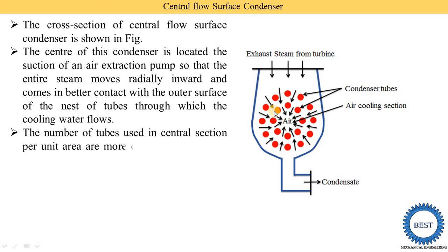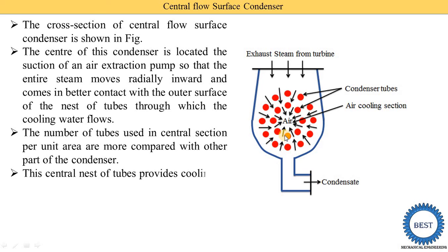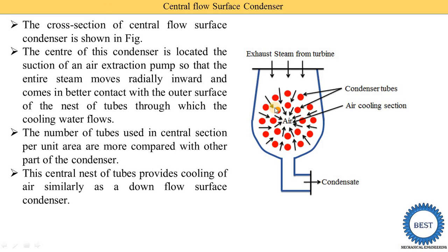The number of tubes per unit area in the central section are more compared with other parts of the condenser. At the center portion, there are more tubes compared to the other portions. This central nest of tubes provides the cooling of air similarly to a downflow surface condenser — better cooling of the air is carried out at the center, similar to downflow surface condensers.